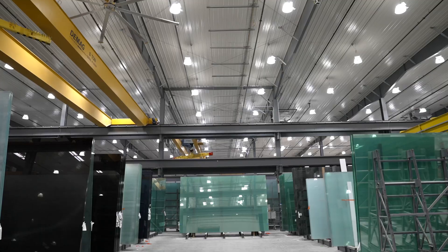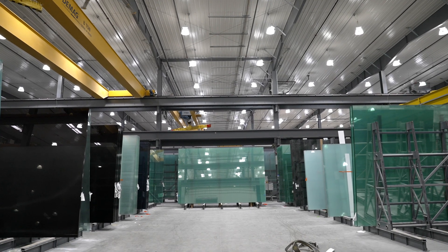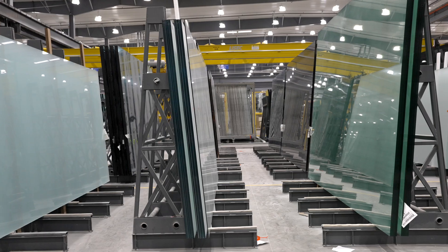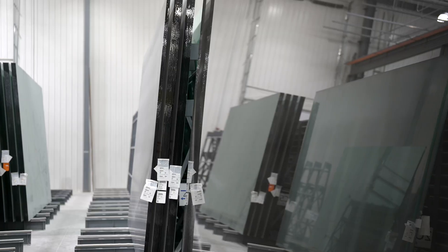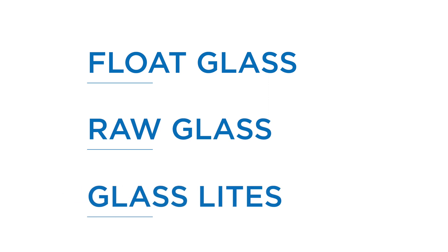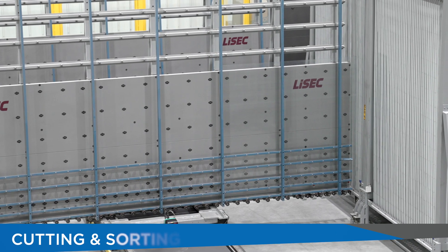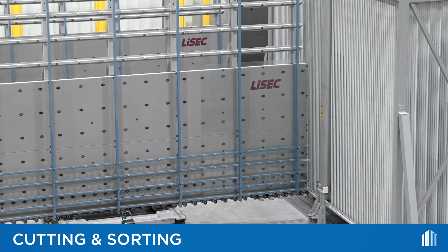The process begins with large sheets of float glass substrates. Substrates are individual plies of glass used to fabricate glass units and may also be referred to as float glass, raw glass, or glass lights. Glass substrates are available in a variety of thicknesses and colors from independent float glass manufacturers.